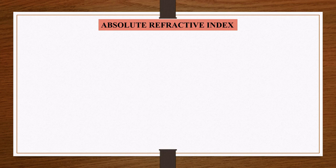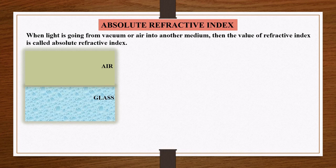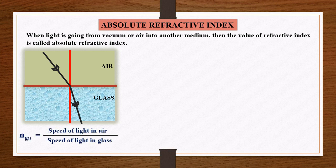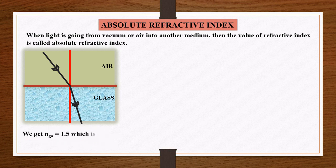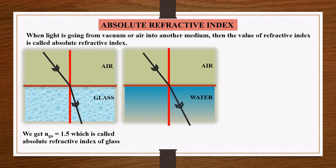Let us understand absolute refractive index more clearly. When light is going from vacuum or air into another medium, the value of refractive index is called absolute refractive index. Consider light coming from air and going into glass. We calculate the refractive index of glass with respect to air using the formula: speed of light in air divided by speed of light in glass, and we get n equal to 1.5, which is called the absolute refractive index of glass.